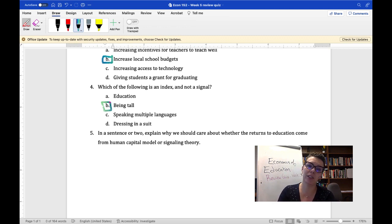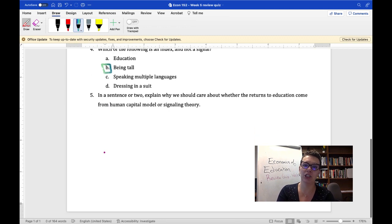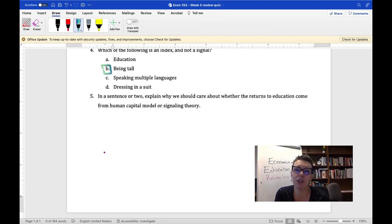And then the last question, in a sentence or two, explain why we should care about the returns to education and whether they come from human capital or signaling theory. And there's two main reasons here and one we're going to graph. The first is we care because it's going to have an effect on how we educate and it's going to affect whether we subsidize education or not. So if it's human capital, we care what we're teaching people because we're making them more productive through what we teach them.